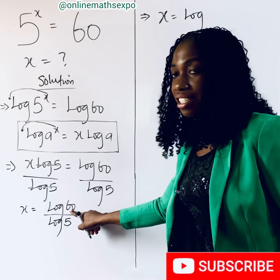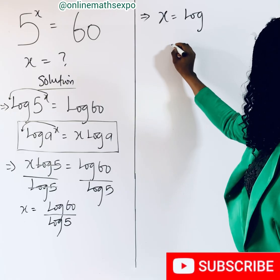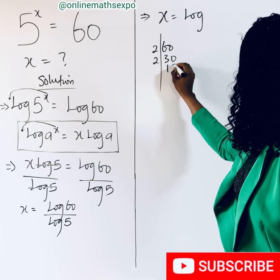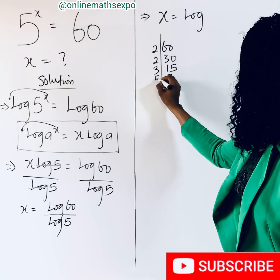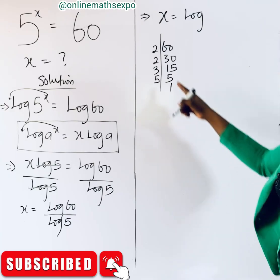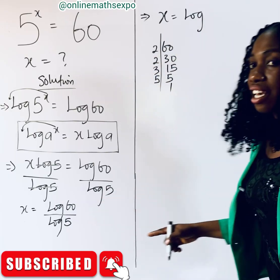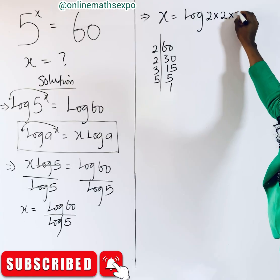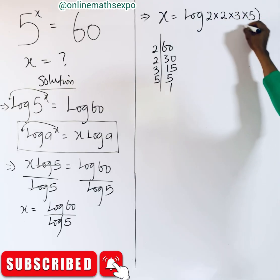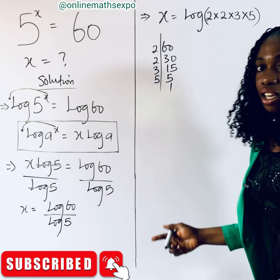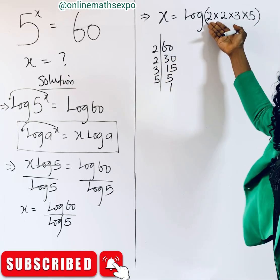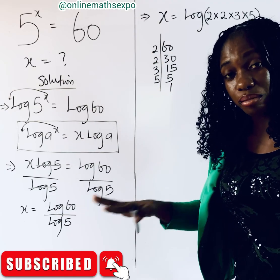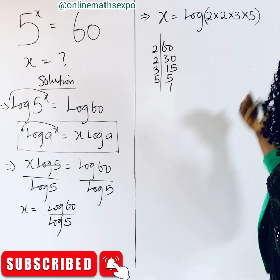We can simplify log 60 by factorizing 60. Breaking it down: 60 ÷ 2 = 30, 30 ÷ 2 = 15, 15 ÷ 3 = 5, 5 ÷ 5 = 1. So 60 = 2 × 2 × 3 × 5. We express this as log(2 × 2 × 3 × 5), all divided by log 5. These are the prime factors of 60 — expressing it in prime form means it's in its lowest form.